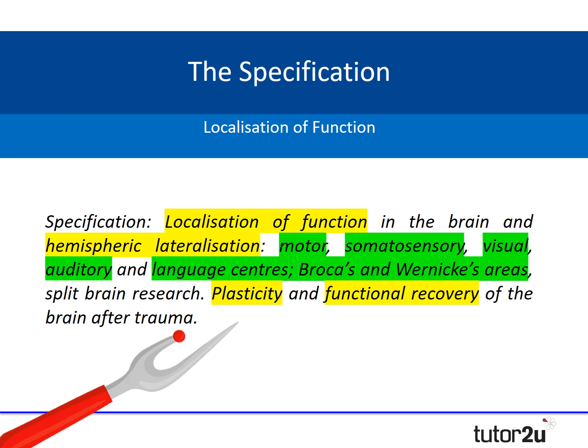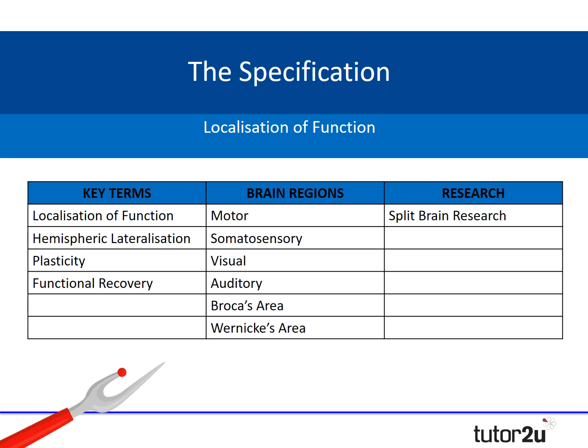On top of that, you also need to be aware of the different areas of the brain: the motor area, somatosensory area, auditory, visual area, and the two language centres — Broca's area and Wernicke's area. And then in addition to all of that, you also need to be aware of split brain research. There's an awful lot of information to know, and being able to unpick that specification is really important.